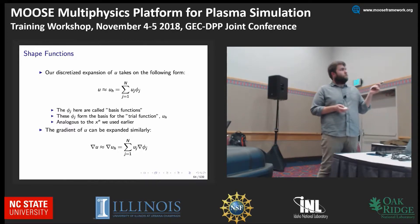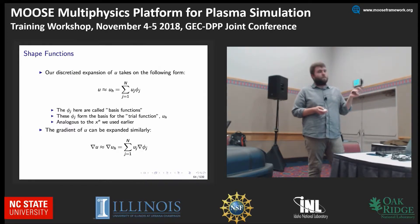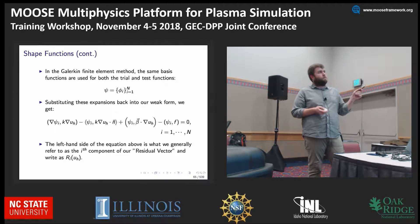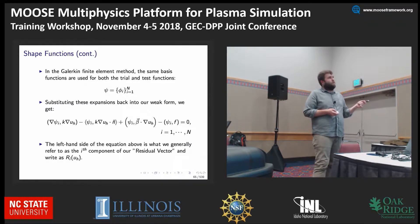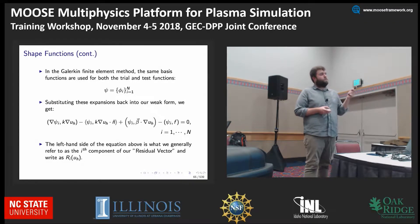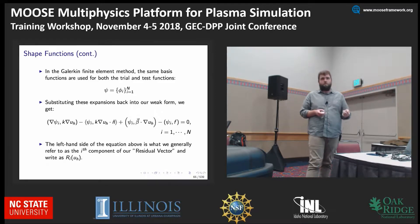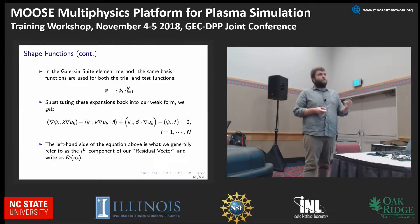The gradient can be expanded in a similar way. Because the coefficients are constant, they pull out of the gradient. In the Galerkin finite element method, the same basis functions are used for both the trial functions and the test functions — the trial functions making up your interpolation, and the test functions that you multiply your strong form by in order to get a residual form.